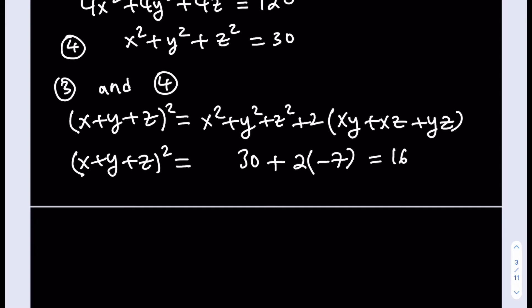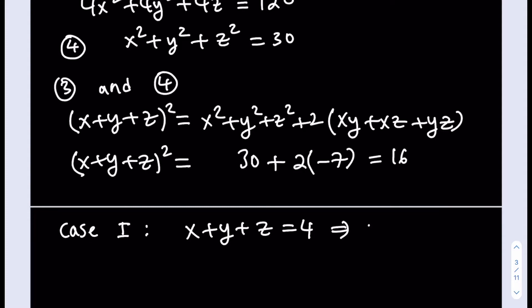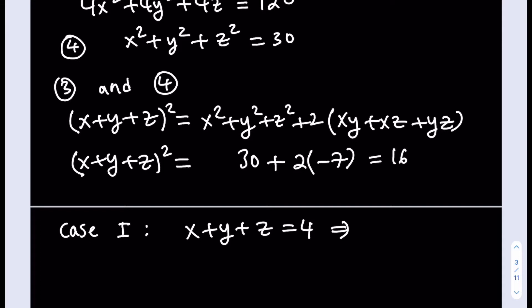Now we have two cases since there are two numbers whose square is 16, and we're looking for real solutions. Case 1: let's say x plus y plus z is equal to 4. From this assumption, I want to isolate x plus z — actually I'll use x plus z specifically because in the next step I'll get something useful. So x plus z is going to be 4 minus y. I'll use that later.